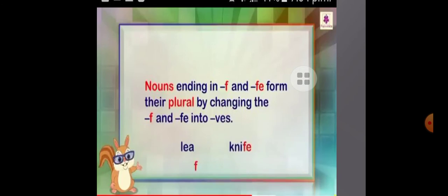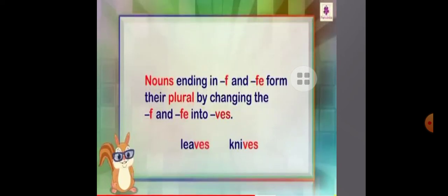The next rule is: nouns ending in -f or -fe form their plural by changing the -f or -fe to -ves. For example, leaf — l-e-a-f — we remove the -f and add -ves to get leaves. Knife — k-n-i-f-e — we remove -fe and add -ves to get knives.